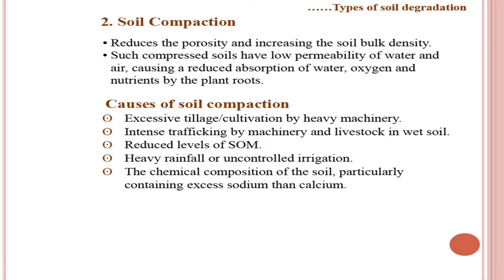The next soil degradation problem is soil compaction, which reduces porosity and increases soil bulk density. Such compressed soils have low permeability of water and air, causing reduced absorption of water, oxygen, and nutrients by plant roots. The main causes are: excessive tillage or cultivation by heavy machinery, intense trafficking by machinery and livestock on wet soil, reduced levels of soil organic matter, heavy rainfall or uncontrolled irrigation, and soil chemical composition containing excess sodium relative to calcium.